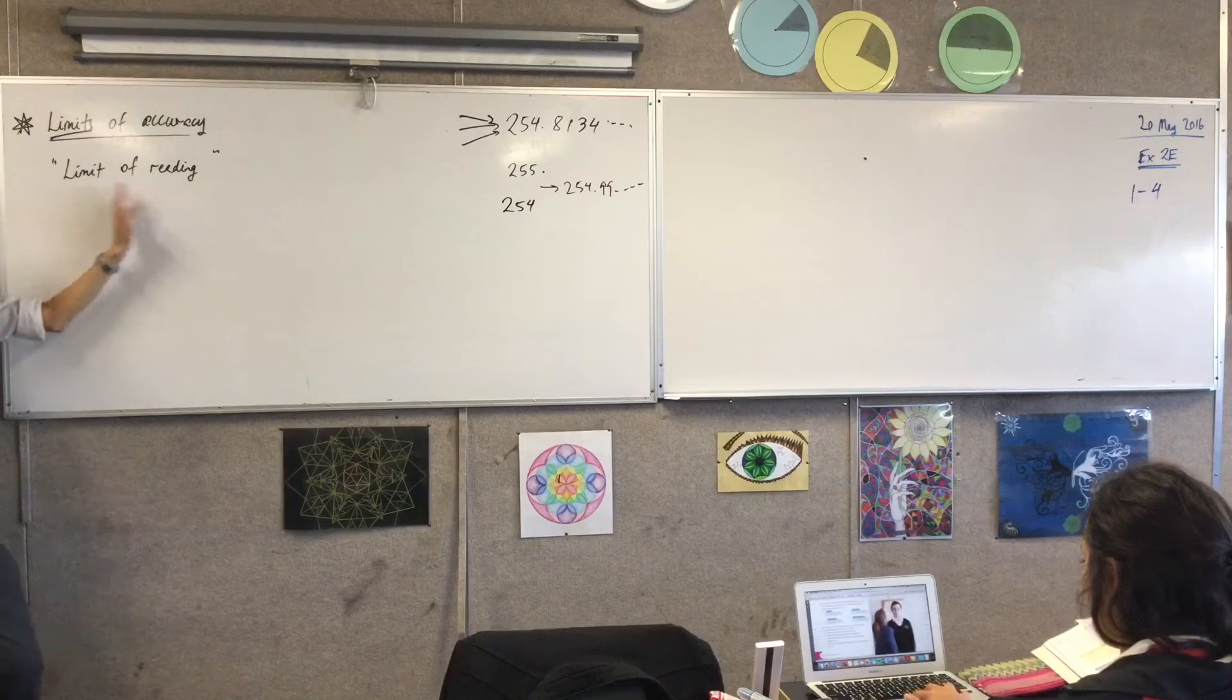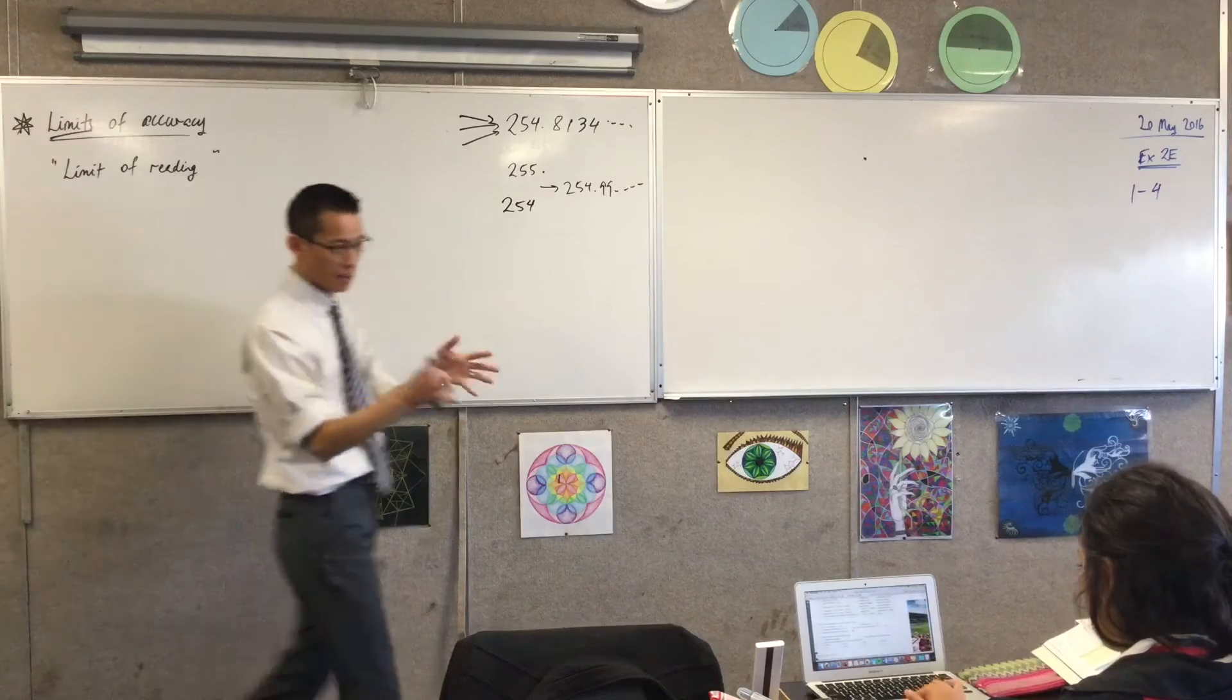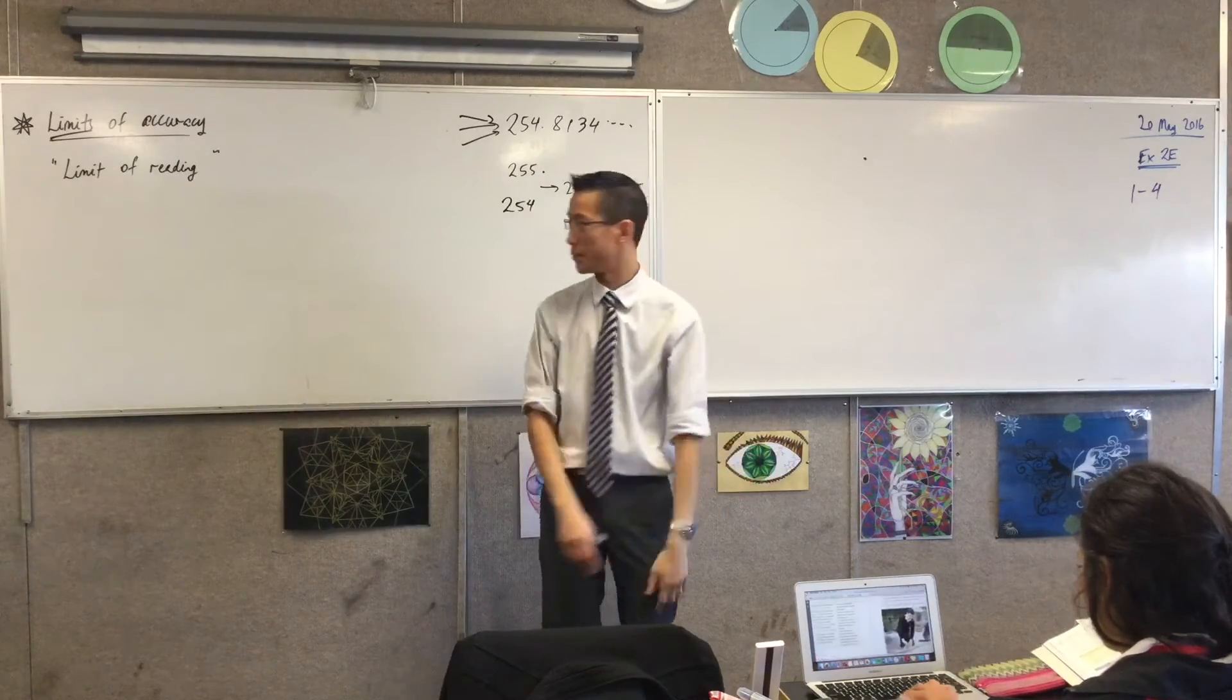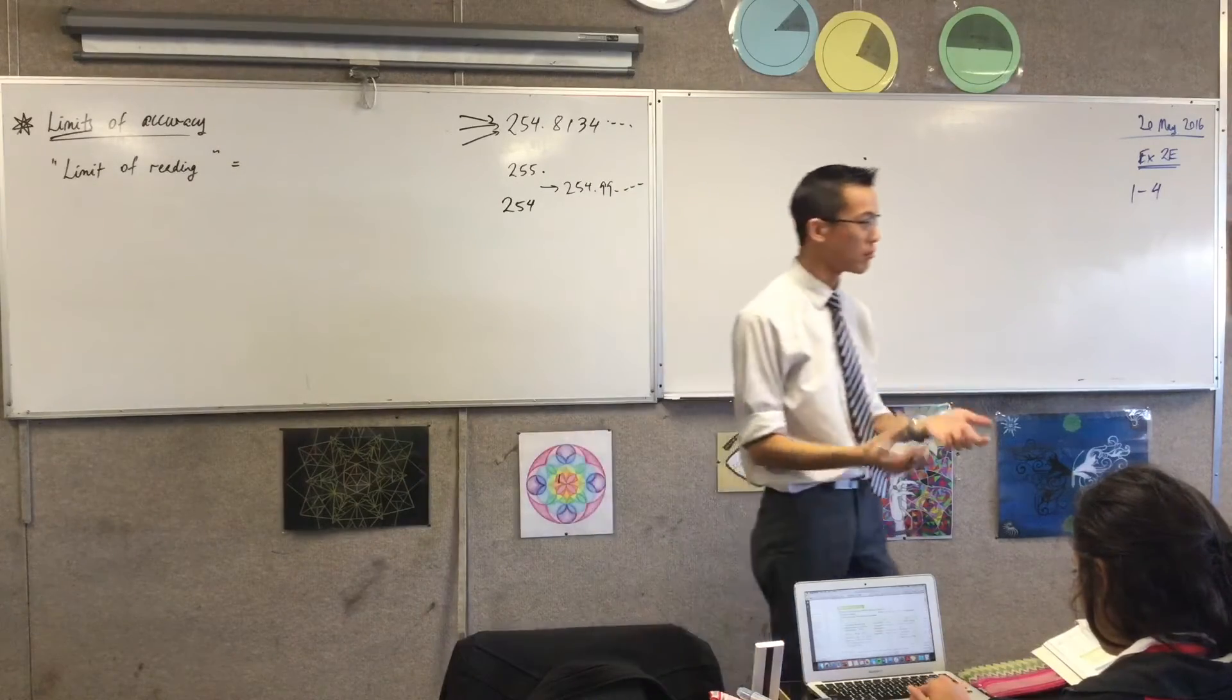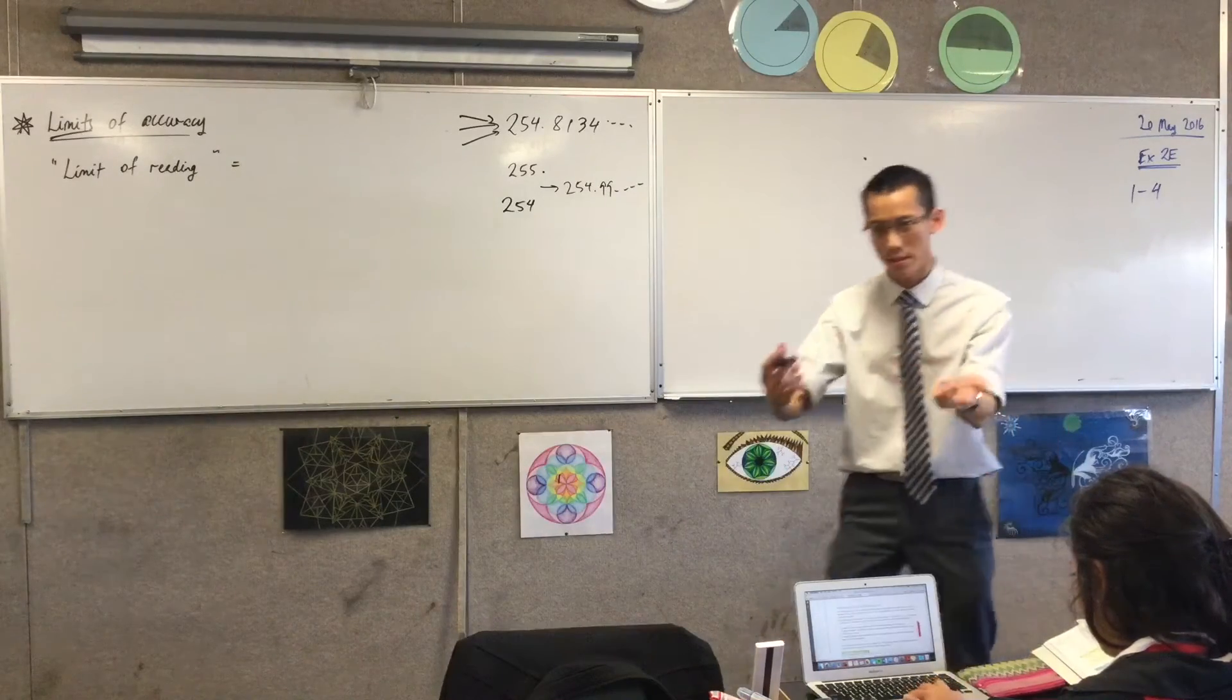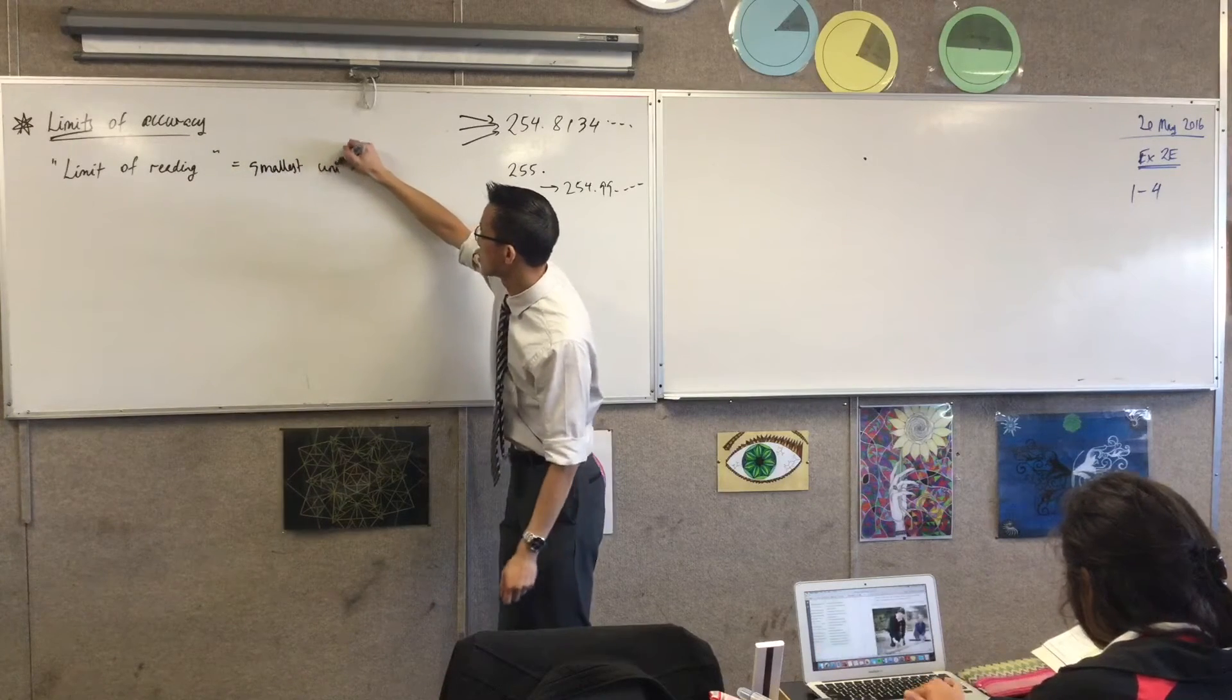I want to introduce some terminology and some language to you, because when you've got language, when you've got terminology, you can describe a problem that you can solve it. So, firstly, we talk about what's the limit of reading. What's the closest, most accurate thing you can read on an actual instrument? So, what that means is, what that's equivalent to is the smallest unit that's measured out. We've been talking about millimeters and centimeters. So, call this the smallest unit on the instrument.